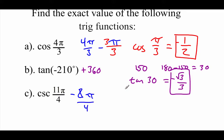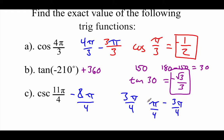So 11π over 4 minus 8π over 4 is 3π over 4. Now finding the reference angle — this is a little bit smaller than π, so I'm going to take π minus 3π over 4. Common denominators here, I'm going to make this 4π over 4, so we're looking at a π over 4 reference angle.